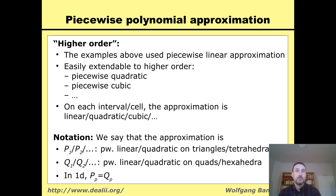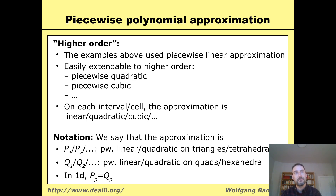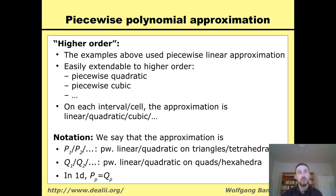The examples I showed used a linear approximation — the polynomial is linear on each cell, or bilinear for quadrilaterals, or trilinear for hexahedra. With a little bit of work, it is extendable to higher polynomial order. So the function could be piecewise quadratic or piecewise cubic. We introduce the notation P1 for linear on triangles or tetrahedra, and P2 for quadratic. P1 and P2 are the spaces for piecewise linear and piecewise quadratic functions on triangles and tetrahedra.